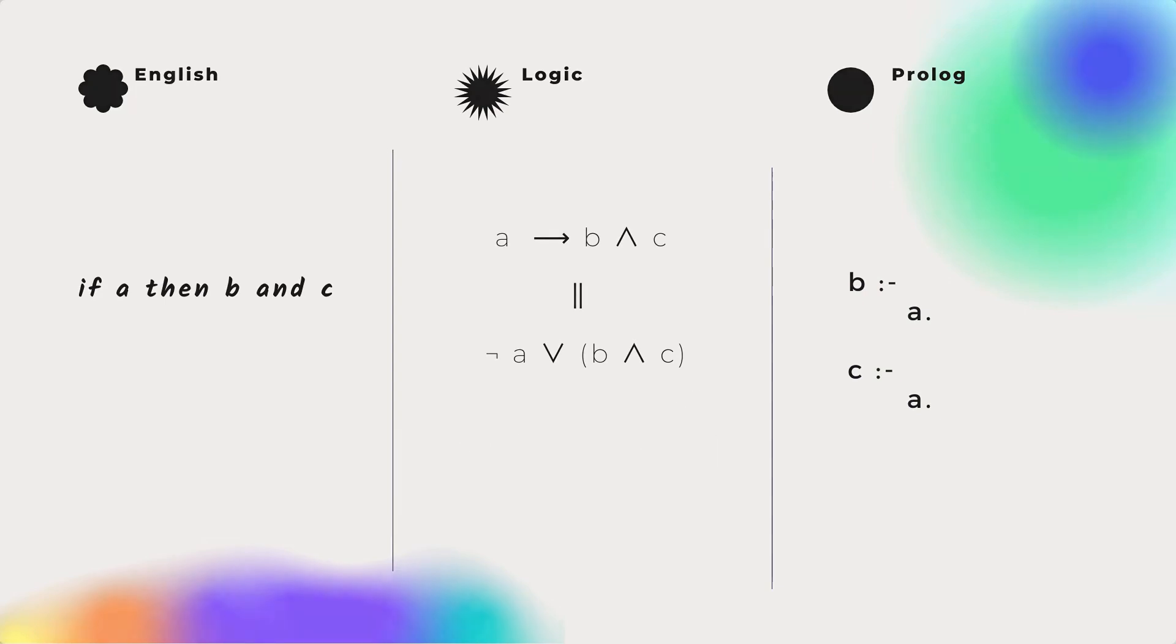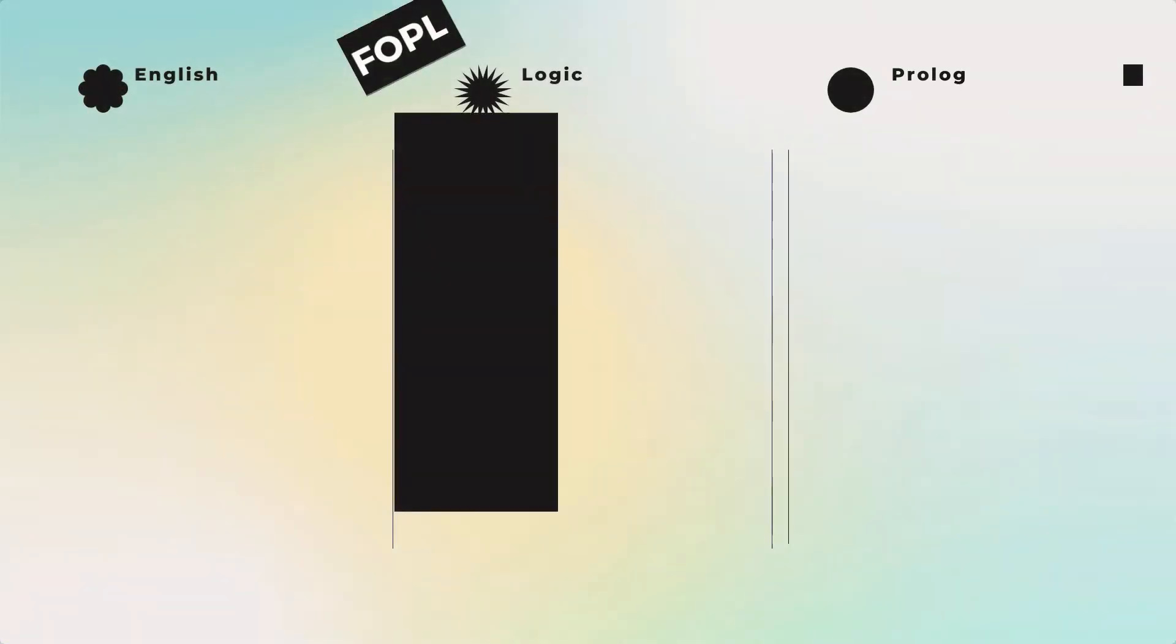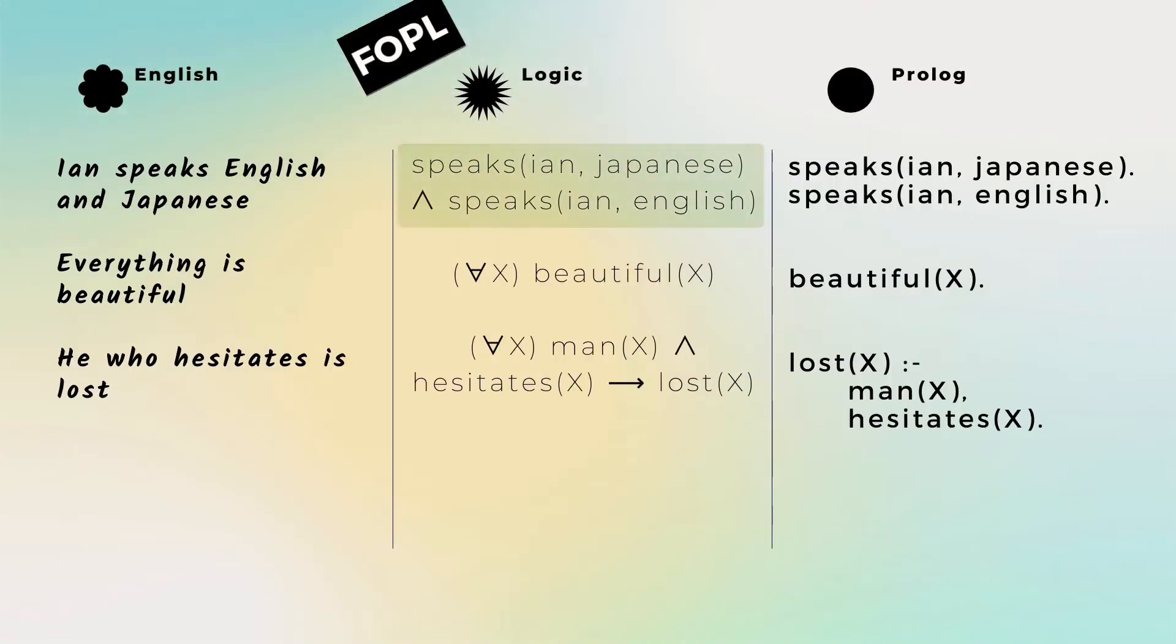Predicate logic follows the same pattern. Predicates that are conjoined together become individual Prolog facts. And for universal quantifiers, every variable in a Prolog rule or fact is implicitly universally quantified. So this fact and rule mean for all X, even though it's not explicitly written.